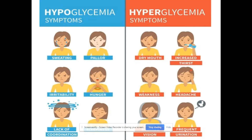Hypoglycemia signs on the left in blue include sweating, pallor, irritability, hunger, lack of coordination, and sleepiness. Hyperglycemia symptoms on the right in red include dry mouth, increased thirst, weakness, headache, blurred vision, and frequent urination.